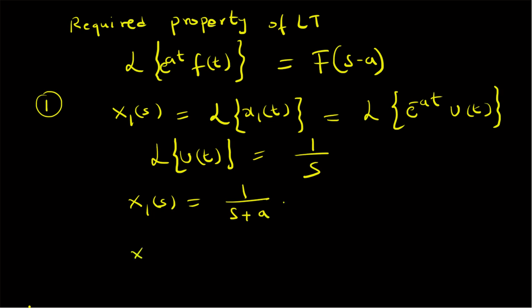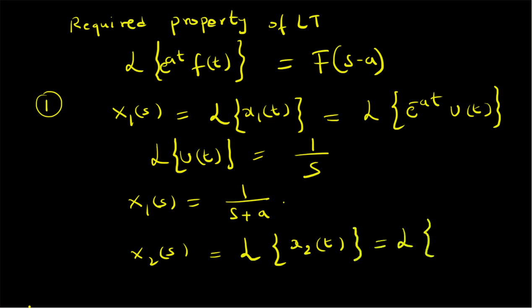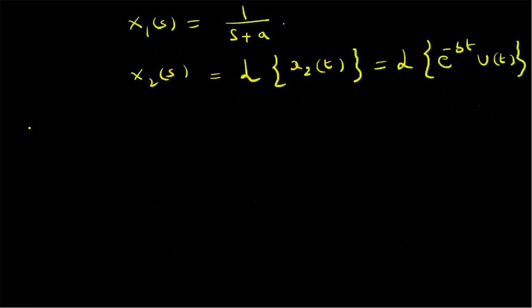Similarly we can find X2(s), which is the Laplace transform of x2(t) = e^(-bt) · u(t). By following the same method as in the calculation of X1(s), X2(s) is equal to 1/(s + b). So X1(s) = 1/(s + a) and X2(s) = 1/(s + b).